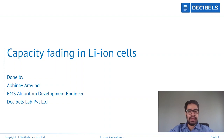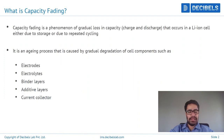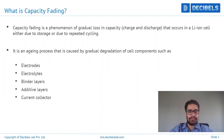We will take a look at a graph and try to understand how exactly capacity fades over cycle number. Capacity fading is a phenomenon that can occur either during storage of the cell or during repeated usage of the cell. Storage is basically when the cell is not in use and is stored completely disconnected from all existing load components or any electronic components.